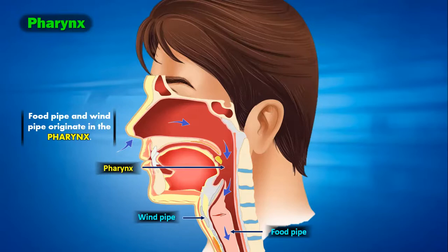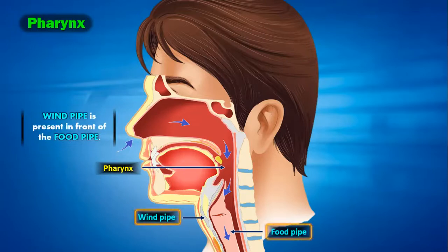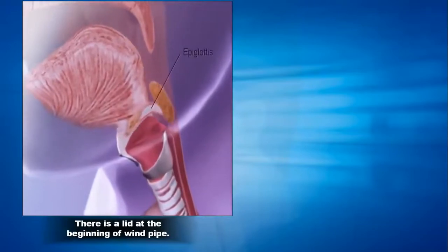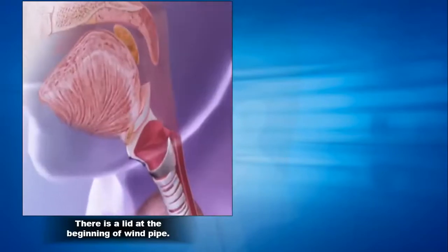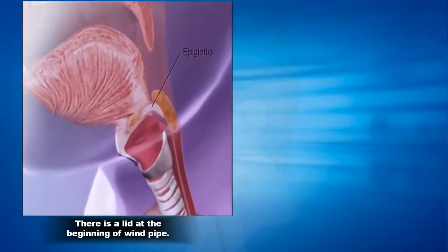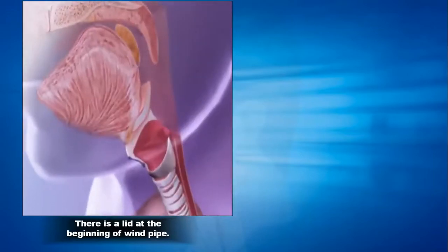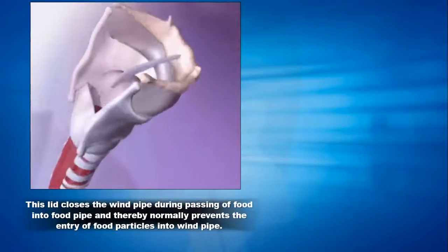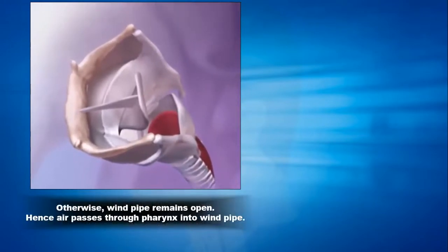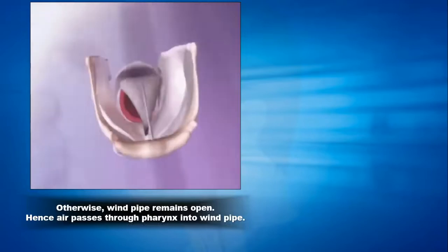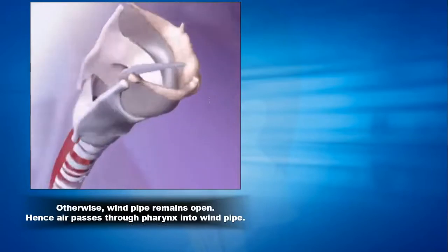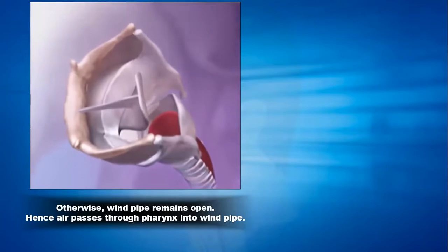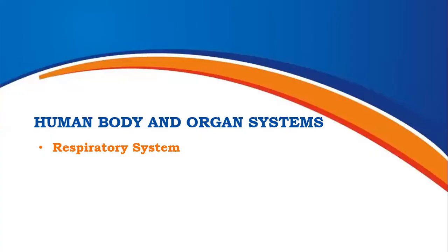The food pipe and wind pipe are visible here — the wind pipe is present in front of the food pipe. There is a lid at the beginning of the wind pipe which works like a valve: it closes when food enters and opens otherwise. This lid closes the wind pipe during passing of food into the food pipe, thereby preventing food particles from entering the wind pipe. Air passes through the pharynx into the wind pipe, which remains open.